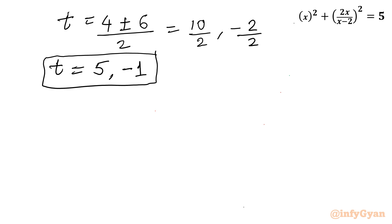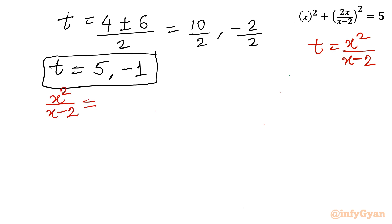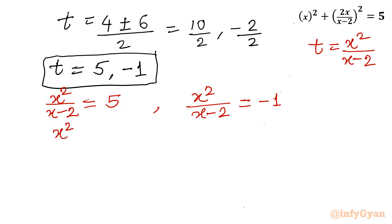Now let us put back the value of t using our substitution t = x²/(x - 2). This frames two equations. First equation: x²/(x - 2) = 5. Cross multiplying gives x² = 5x - 10, so x² - 5x + 10 = 0.